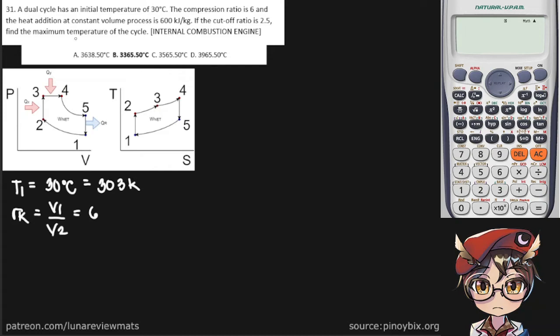The heat addition at constant volume, that's here, Qx is equal to 600 kilojoules per kilogram.